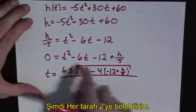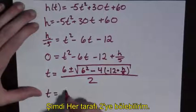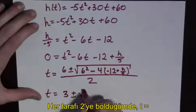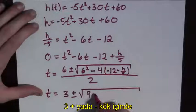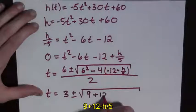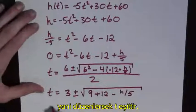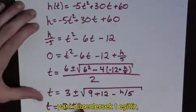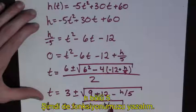Now, we can divide every term in the numerator by 2, so we get t is equal to 3 plus or minus the square root of 9 plus 12 minus h over 5. And so t is equal to 3 plus or minus the square root of 21 minus h over 5.